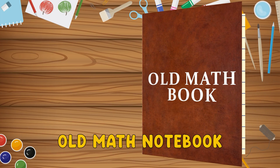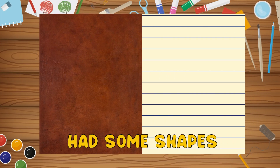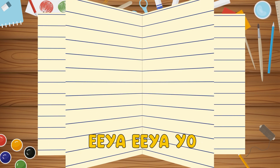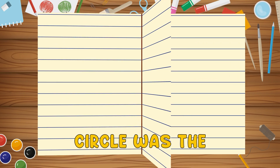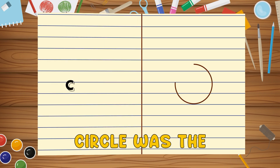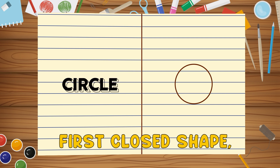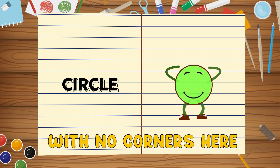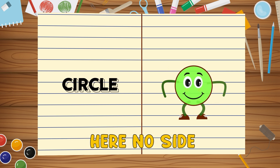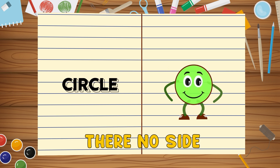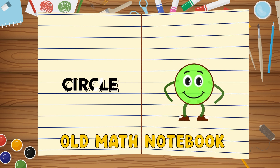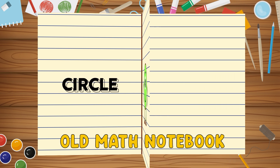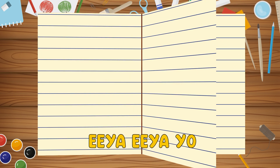Old math notebook had some shapes, E-I-E-I-O. Circle was the first close shape, E-I-E-I-O. With no corners here and no angles there, here no side, there no side, it had no sides. Old math notebook had some shapes, E-I-E-I-O.